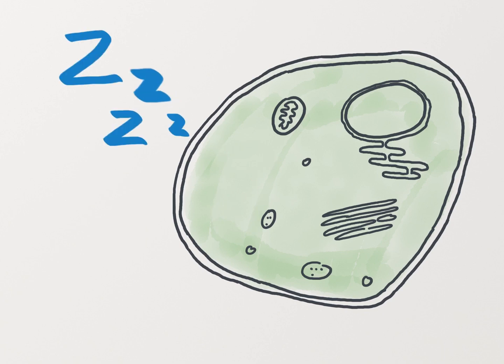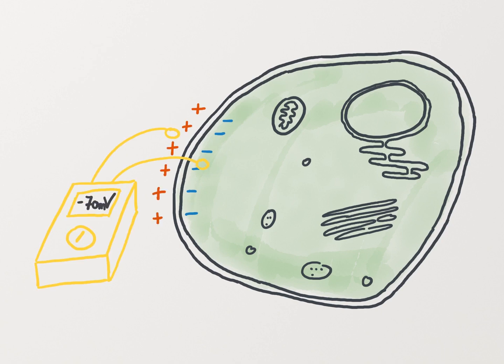If we consider a cell at rest, the membrane potential in general will be around minus 70 millivolts, meaning that there is more negative ions on the inside of the cell compared to the outside of the cell.